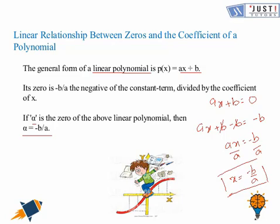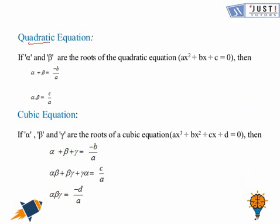Now we move ahead to the quadratic equation. If alpha and beta are the roots of the quadratic equation ax squared plus bx plus c equals zero, then alpha plus beta is equal to minus b by a, where b is the coefficient of x and a is the coefficient of x squared.